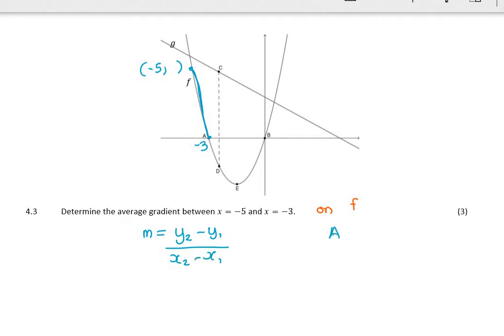I do know the point A is negative 3, 0, so I don't have to do any work there. I don't know what negative 5's y value is. But again, not a problem, because what is f of negative 5? It would be negative 5, and then negative 5 plus 3, which would be negative 5 times negative 2, which would be 10.